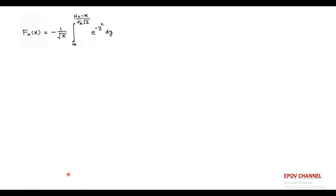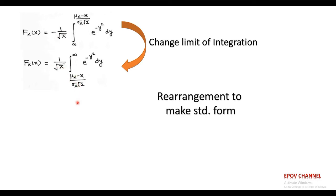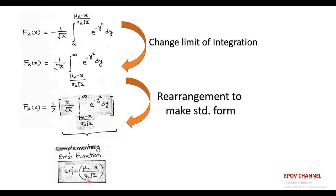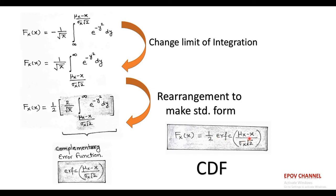Next, we further change the limit of integration, accounting for the negative sign, and multiply and divide by 2 to make it a standard form called the complementary error function. This complementary error function is denoted by ERFC and is a function of the lower limit of integration. So, the Gaussian CDF can be represented in terms of the complementary error function, which is widely used for statistical analysis of noise performance in digital communication systems. The CDF F(x) equals one-half times ERFC of (mu minus x) upon (sigma root 2).